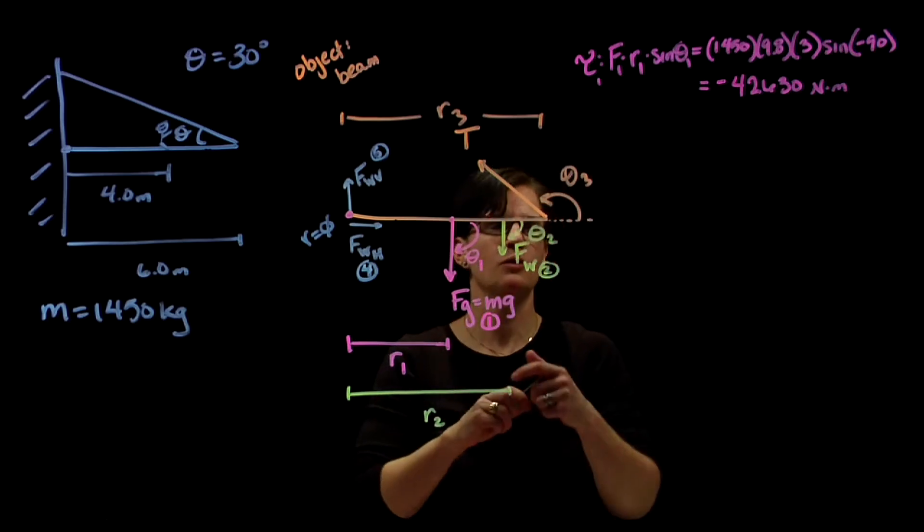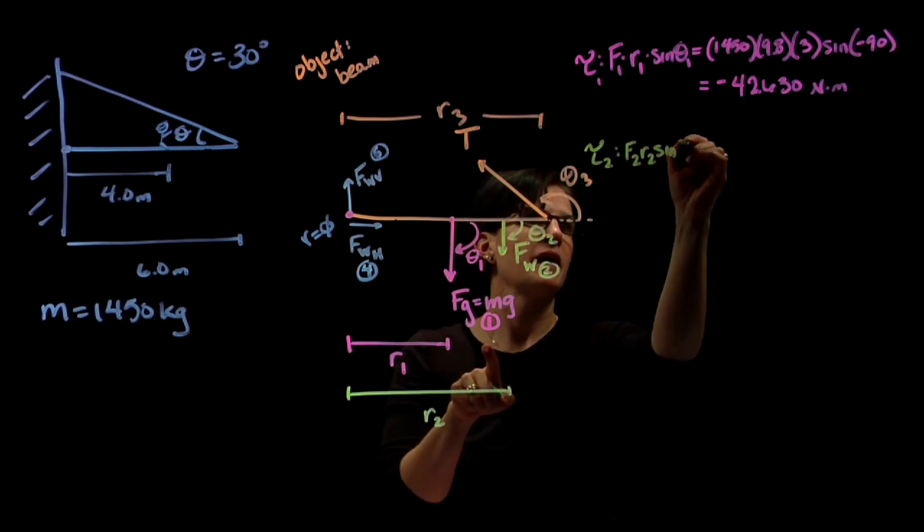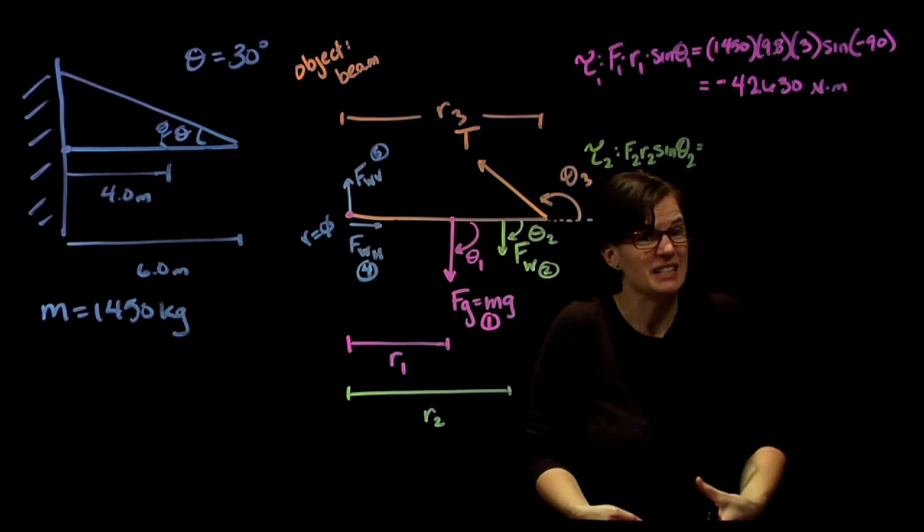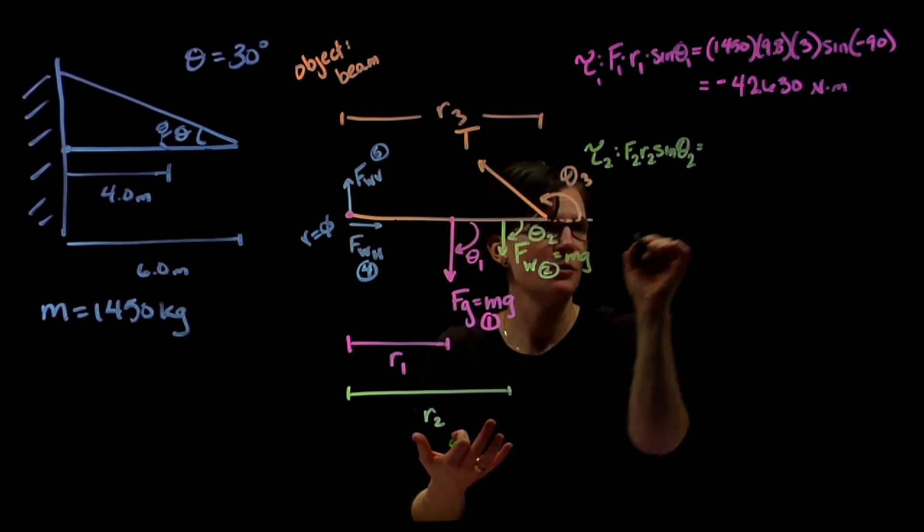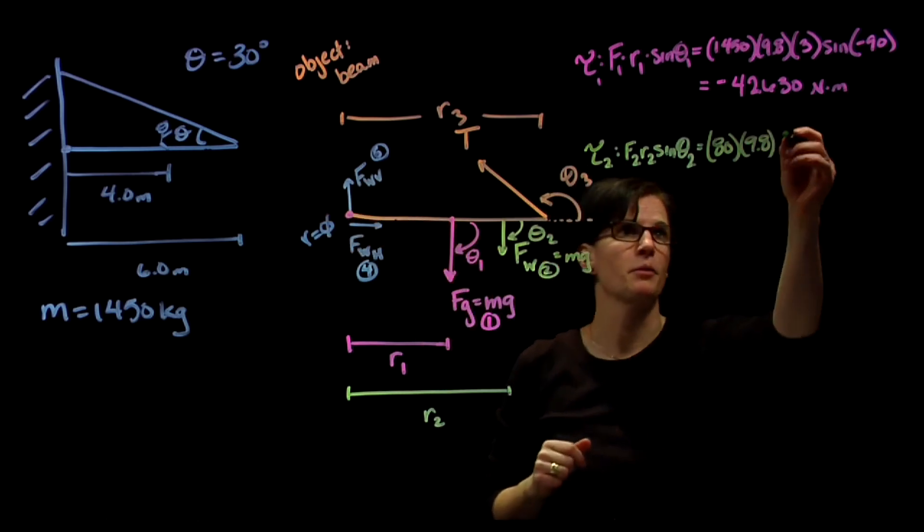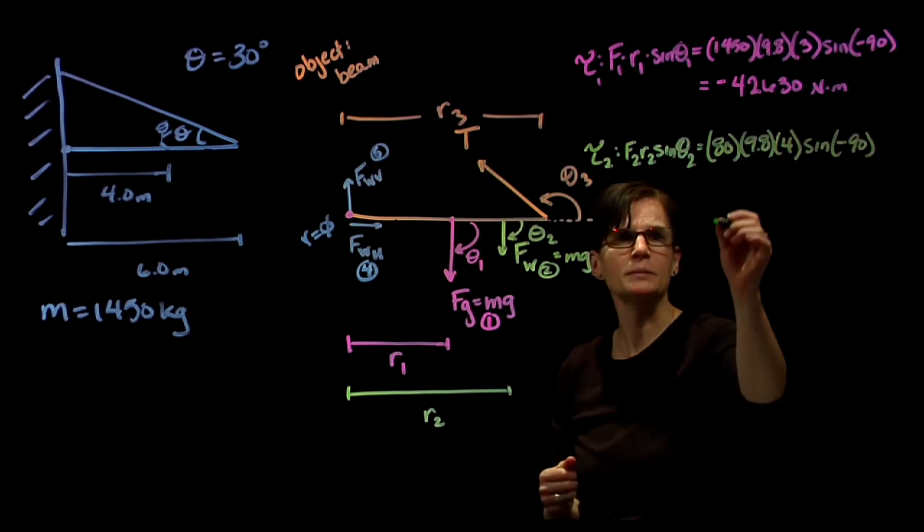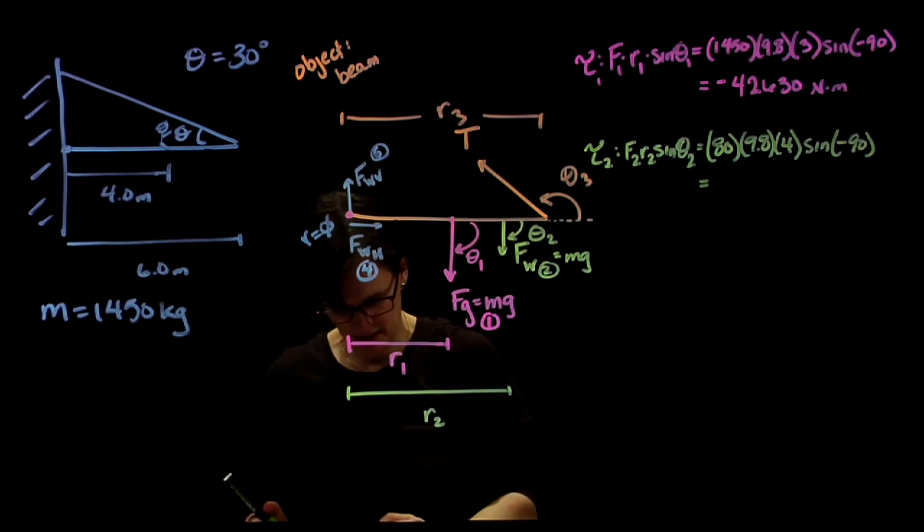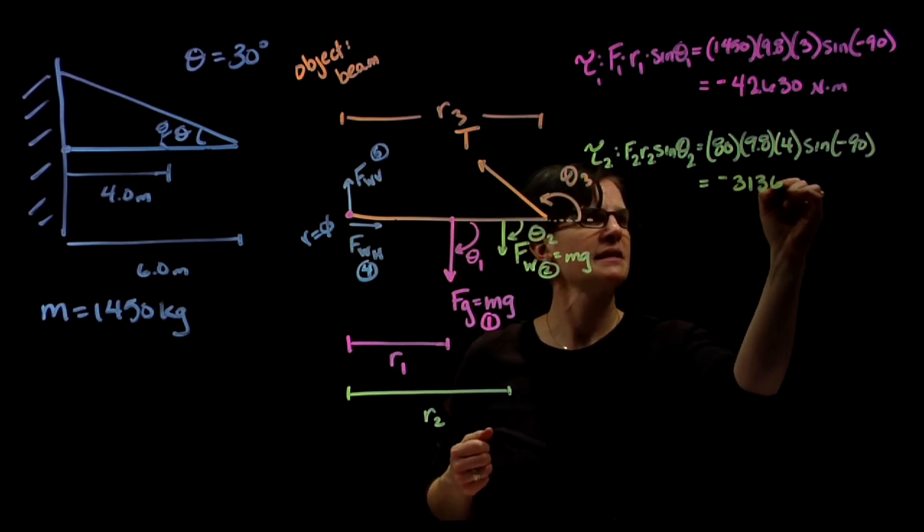Torque number two, that's the torque of our worker. That's going to be force two, radius two, sine of the angle two. The worker is exerting his mass and his force of gravity down on the beam. He's 80 kilograms, so his force is mg of the worker, that's 80 times 9.8. He's acting at four meters from the pivot point, and he's acting at an angle of negative 90. So the torque exerted by the worker is 80 times 9.8 times four times the sine of negative 90, which is negative one, minus 3136 Newton meters.